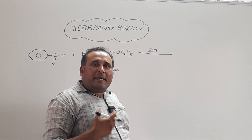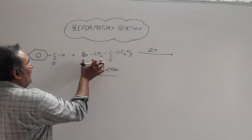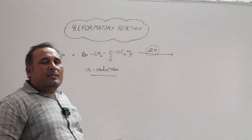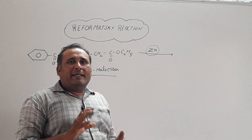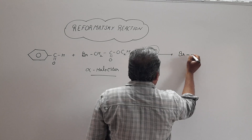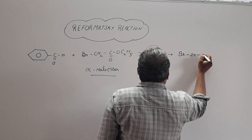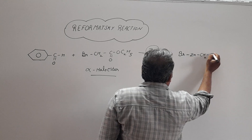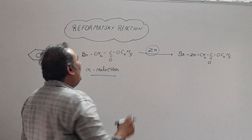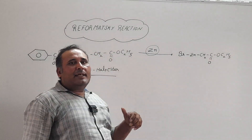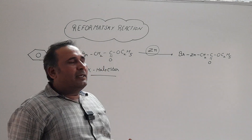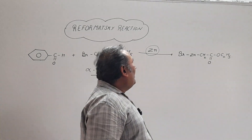Let's understand the mechanism of the Reformatsky reaction. When zinc reacts with the alpha-haloester, it gives us an organometallic compound — for example, Zn-CH₂-C(=O)-O-C₂H₅. Similarly, when an alkyl halide reacts with magnesium, we get a Grignard reagent, which is also an organometallic compound. So we get this organometallic compound.